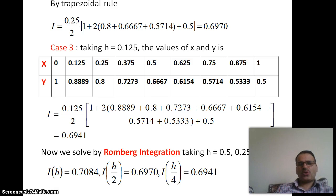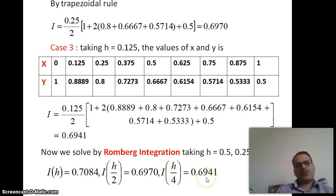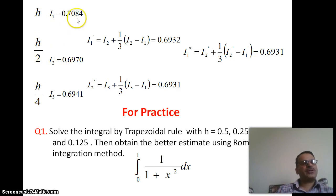Now we apply Romberg integration using the three computed values with intervals 0.5, 0.25, and 0.125. We set I1 = 0.7084, I2 = 0.6970, I3 = 0.6941. These are placed in a table similar to a forward difference table with columns for h, h/2, and h/4.